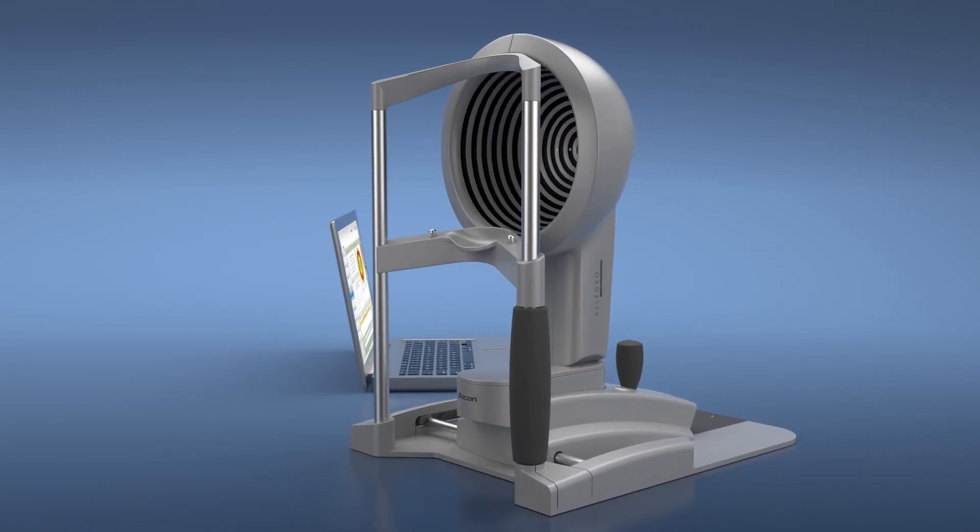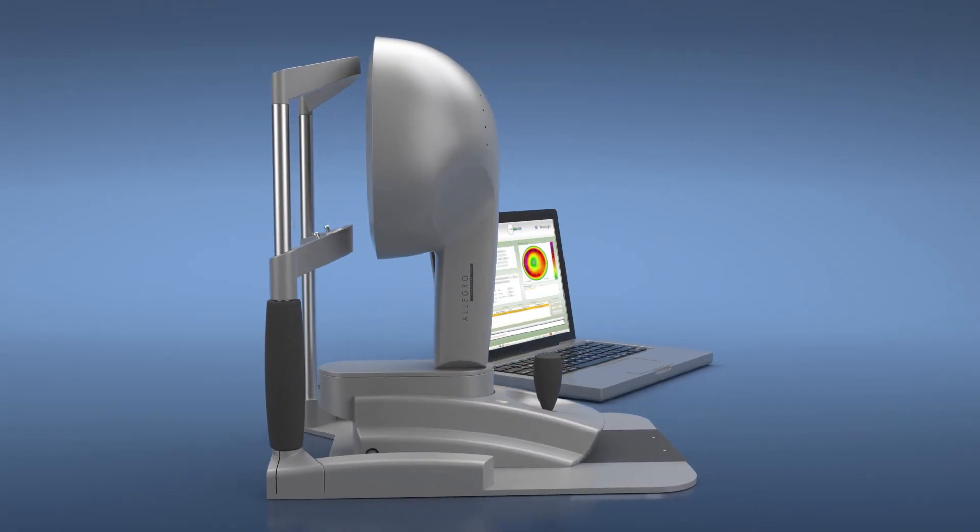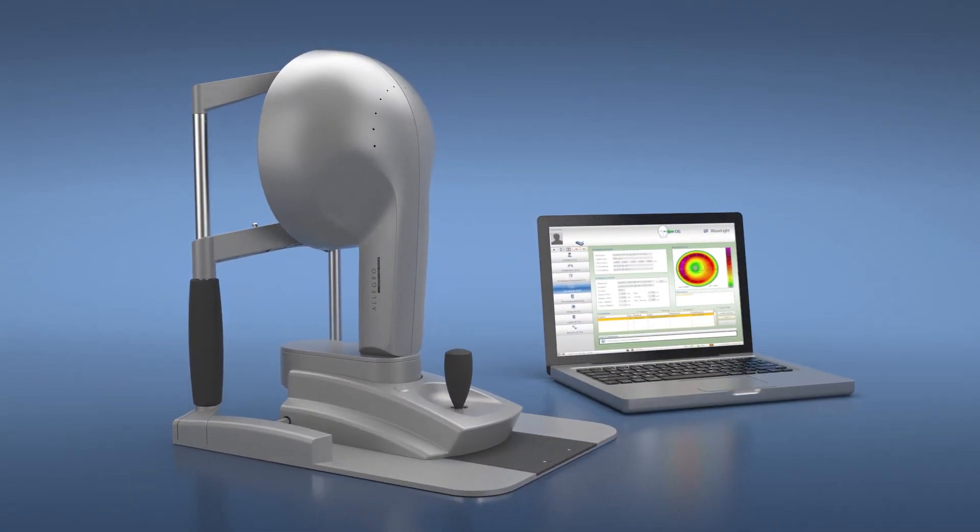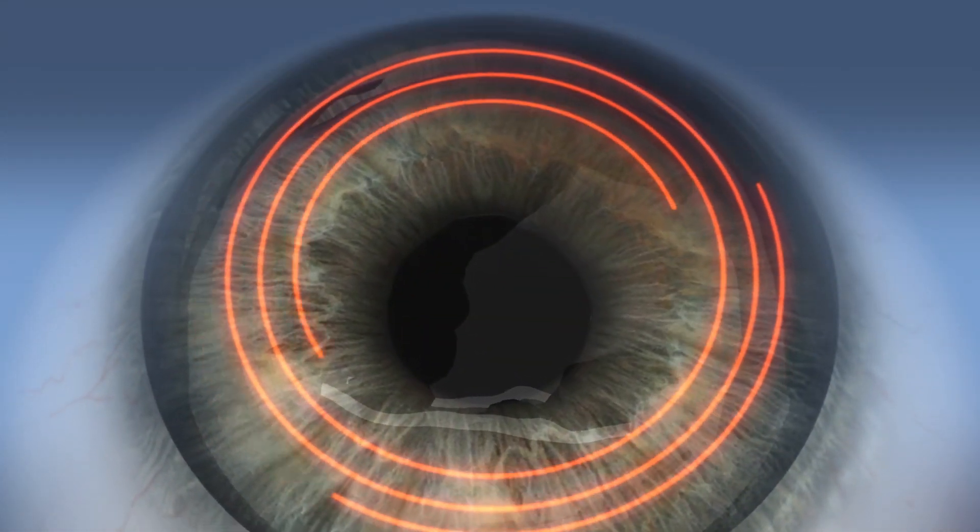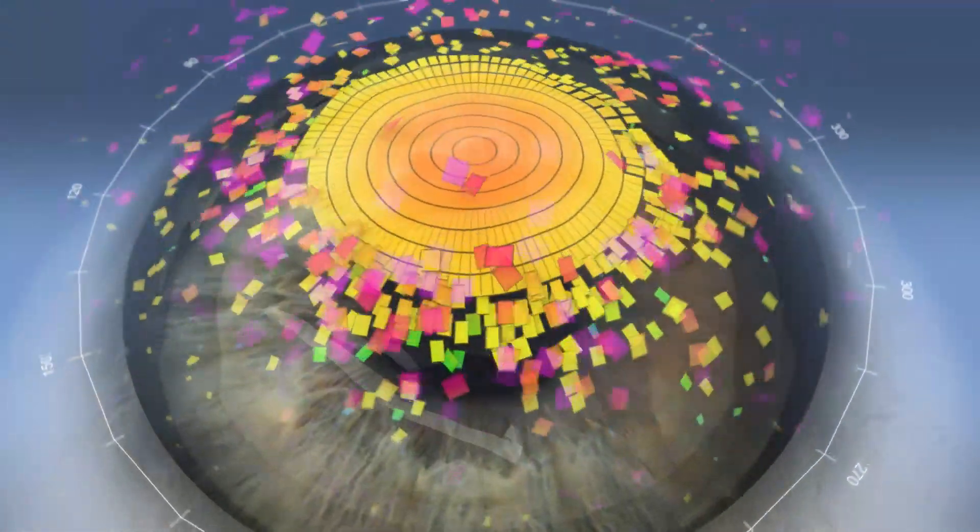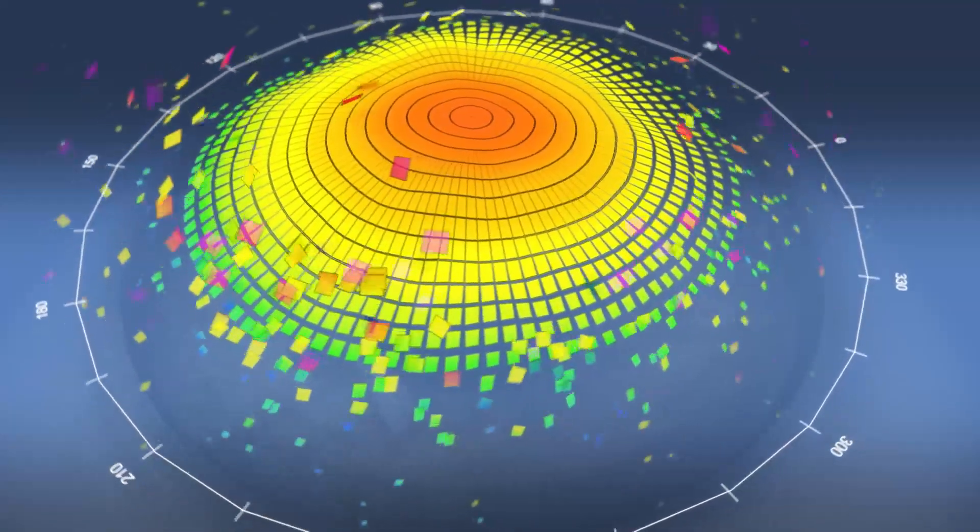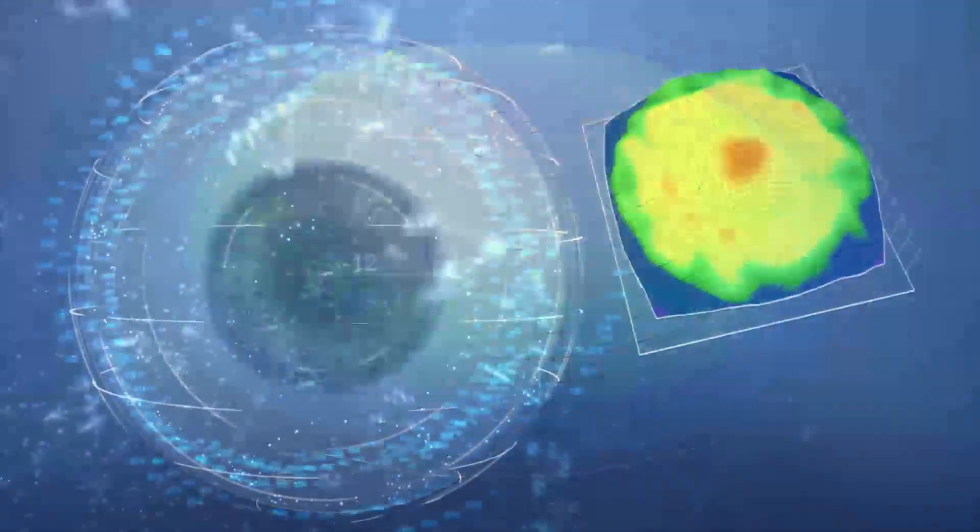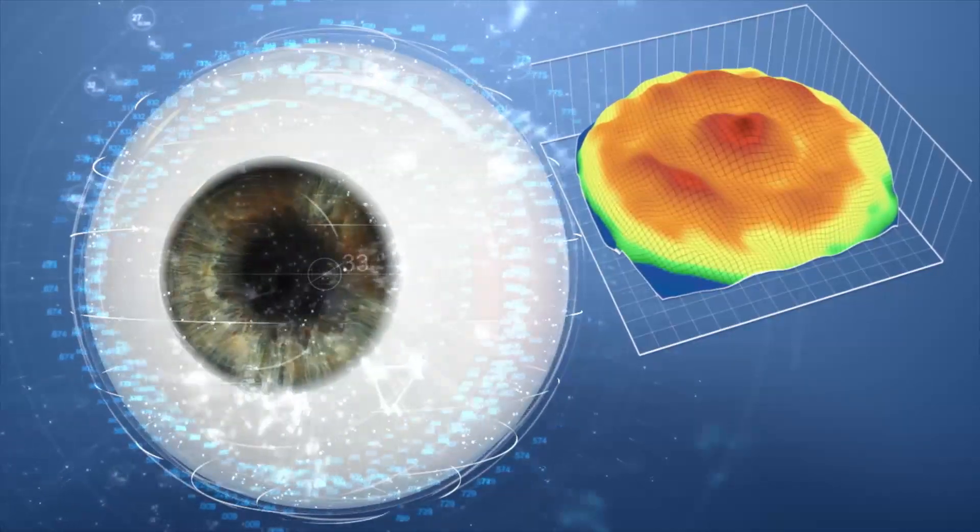There is a new way to personalize a refractive procedure using the unique topography features of the eye. Using the Vario corneal topography system, the patient's eye is imaged and analyzed using 22,000 unique elevation points on the cornea.